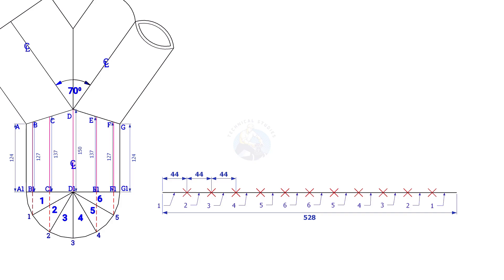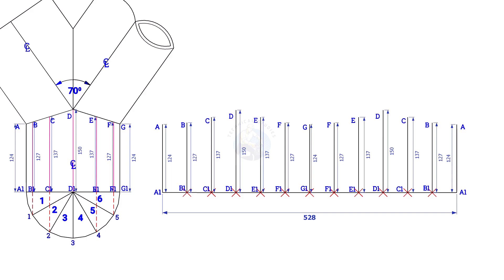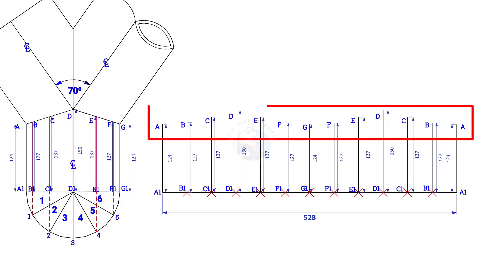Draw a perpendicular line at the starting of this line. The length shall be 124 millimeters. Similarly, draw lines B, B1, C, C1, etc. Draw a smooth curve starting from A to A.